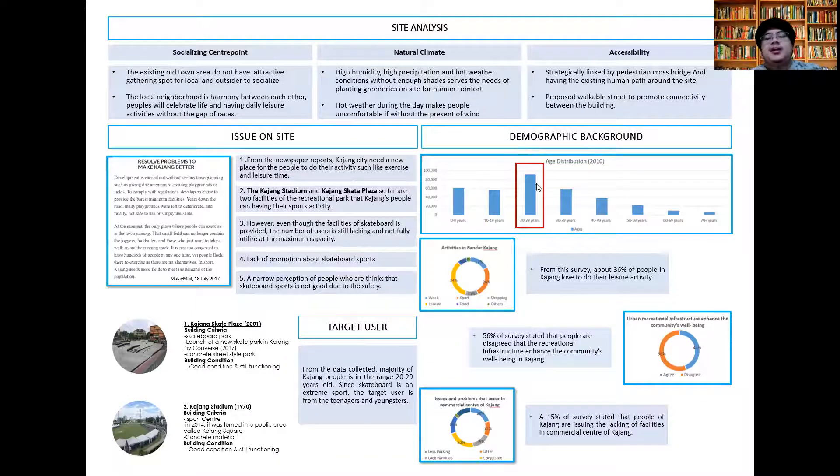Based on demographic background, we can see that the majority of people are in the range of 20 to 29, which is almost 90,000 from the age distribution 2010. Since skateboard is an extreme sport, the target users might be teenagers and youngsters.